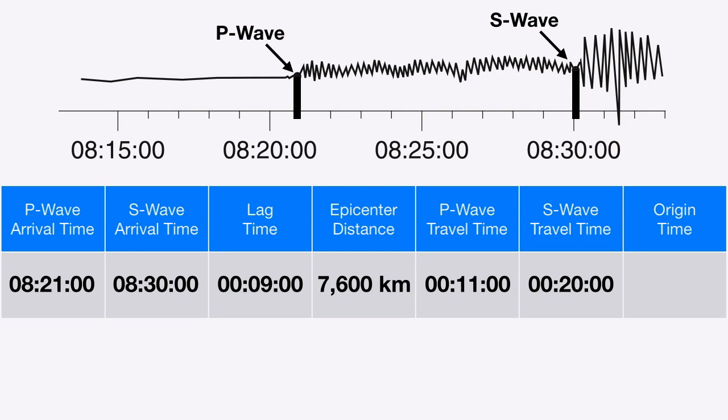That's important because in order to find the time that the earthquake happened — also known as the origin time — I need to know the travel times. There are actually two ways to calculate the origin time: we can do it using our P wave data or our S wave data. If we did things properly, we should get the same answer both times.